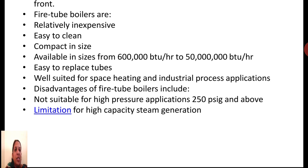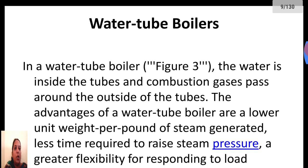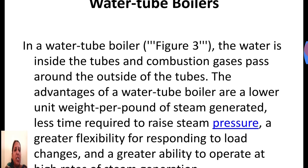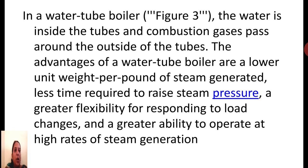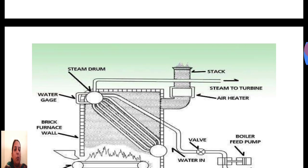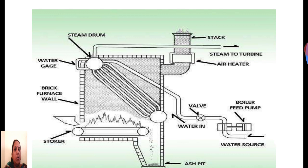There is also a limitation of high capacity steam generation in fire tube boilers, which is why we move to water tube boilers. In fire tube boilers, the tubes carry the gases while water surrounds the tubes. In water tube boilers, the water is inside the tubes and gas is passed around the outside. This gives advantages such as lower unit weight per pound of steam generated, less time required to raise steam pressure, greater flexibility for responding to load changes, and greater ability to operate at high rates of steam generation.